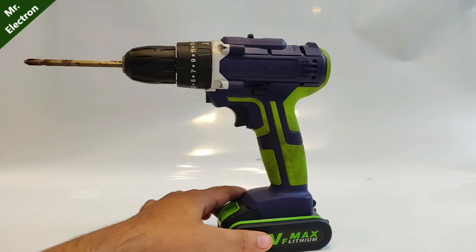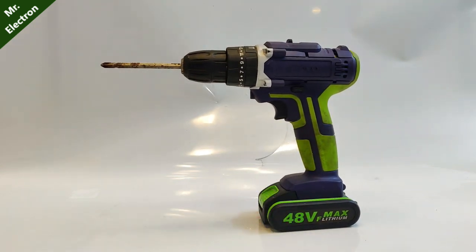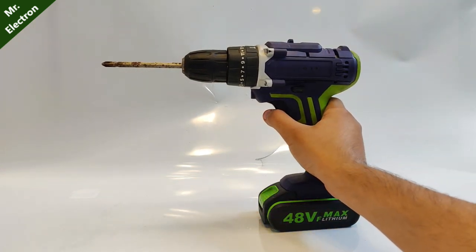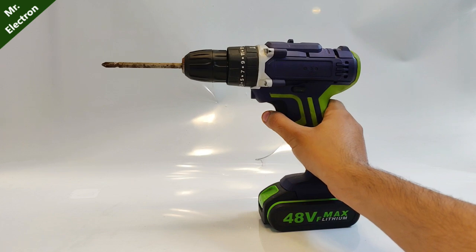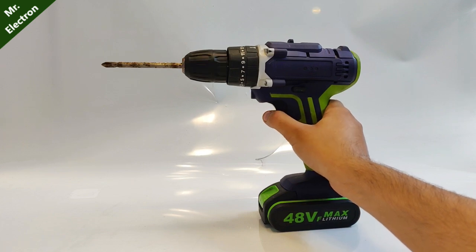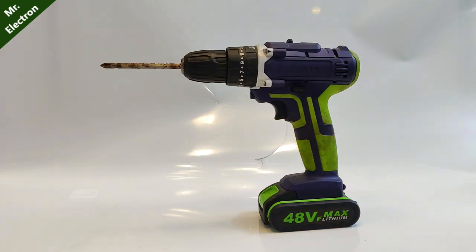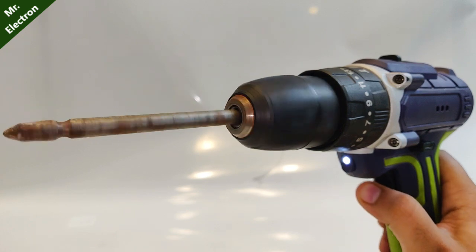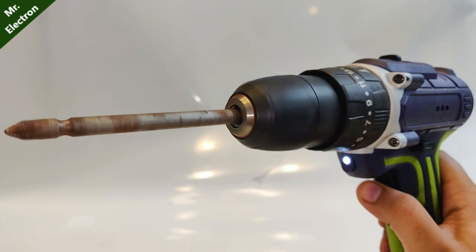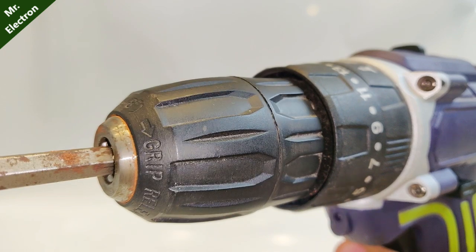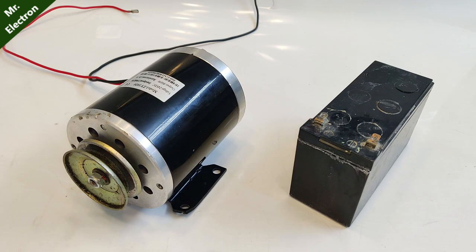Hi guys, you might have seen the instantaneous dead stop function in many cordless drill machines and electric screwdrivers. So today in this video, I'm going to teach you how it occurs in the cordless drill machine or electric screwdriver and how you can also do it at home. It's very easy.